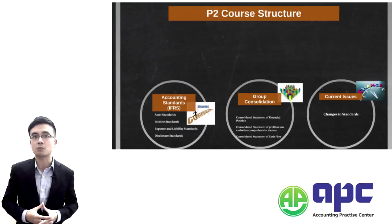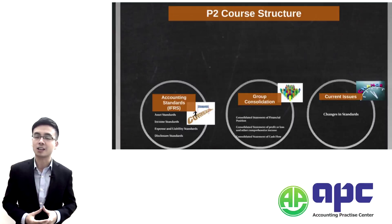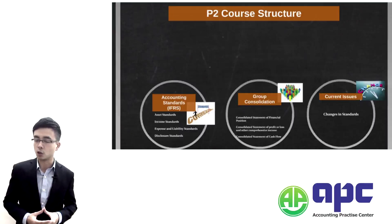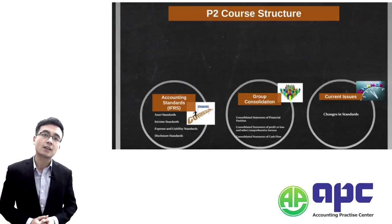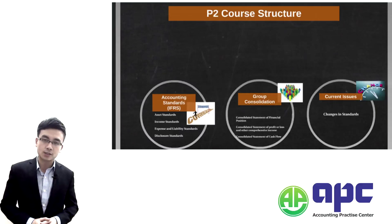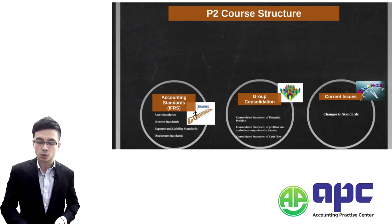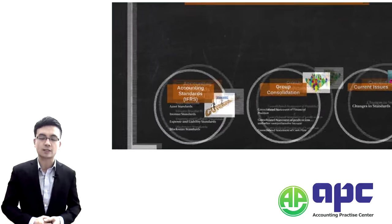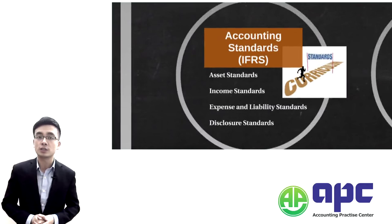That's the exam structure of Paper 2, and the passing mark is 50. Within the accounting standards, here at APC we divide those accounting standards into four different categories.